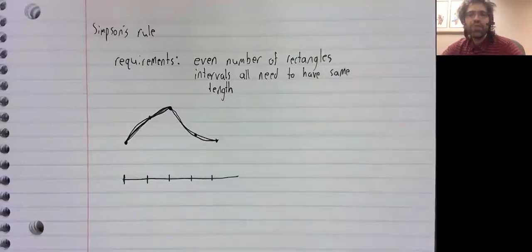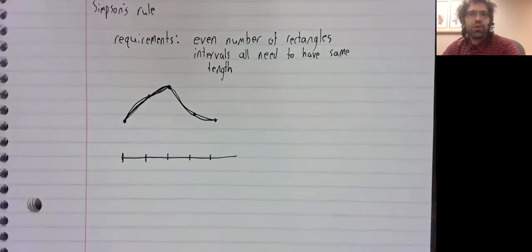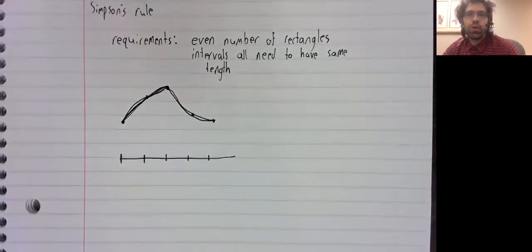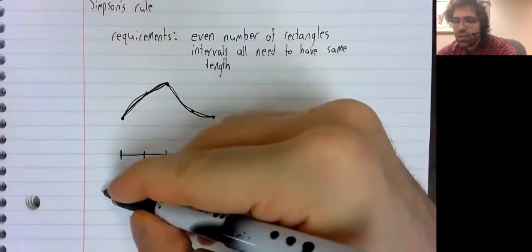I wrote rectangles by habit, but Simpson's Rule doesn't use rectangles. As we've said, it uses parabolas. Knowing where Simpson's Rule formula ultimately comes from, and being able to derive the Simpson's Rule formula are two very different things. I'm just going to give it to you.